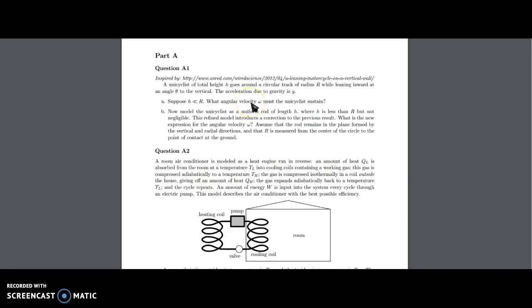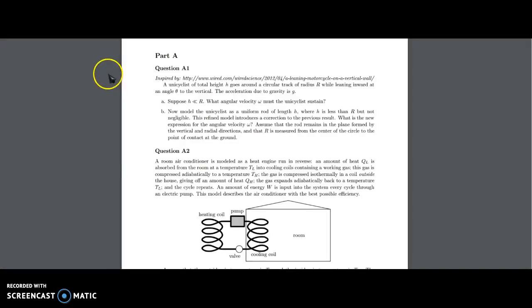In this question, we have a cyclist moving in a circle. Like all of my other problems, I'm going to draw a diagram. So here's our cyclist, and it says that the cyclist is at an angle theta to the vertical. The cyclist is moving in a circle of radius r, and we're asked to find omega. What is its angular velocity?